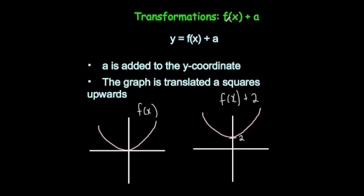In this video we're going to look at transformations, and in particular f(x) + a. If you have a function of x and then add a to it, you're going to be adding a to each one of the y-coordinates. The effect is that the graph is translated a squares upwards. So for instance, if you had a quadratic and you added 2 to the function, each coordinate would move two squares upwards and the graph would move up two squares.